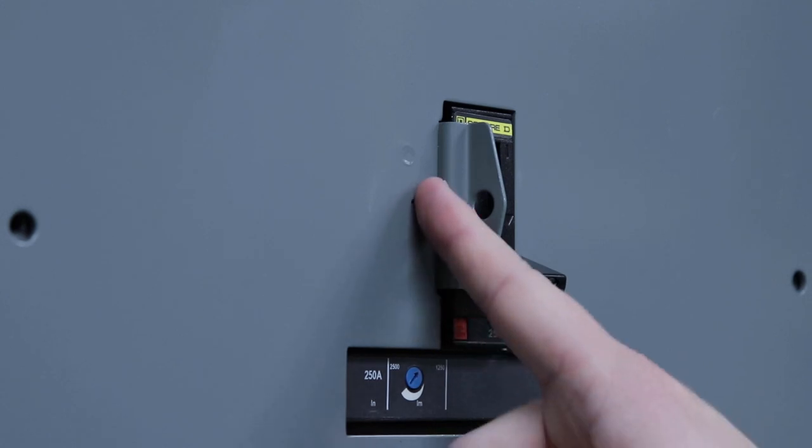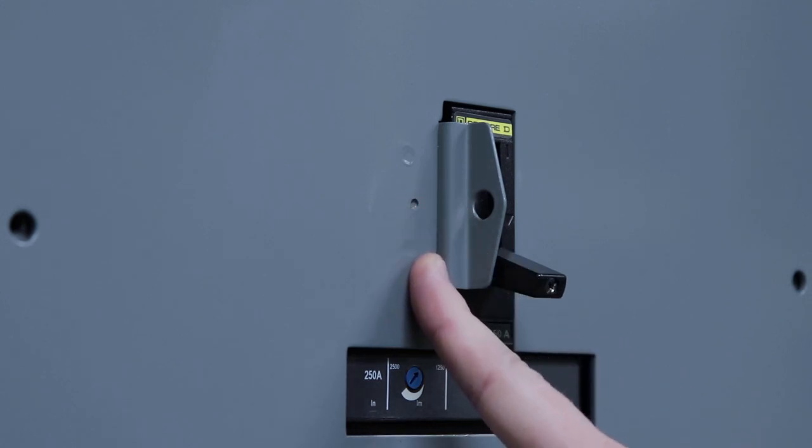As you can see, the padlock hasp is an integral part of the cover of the enclosure.